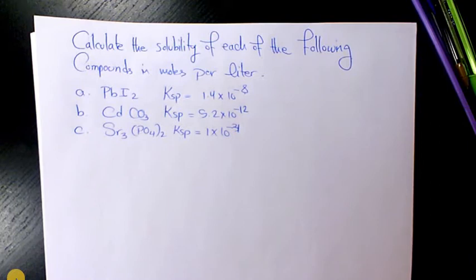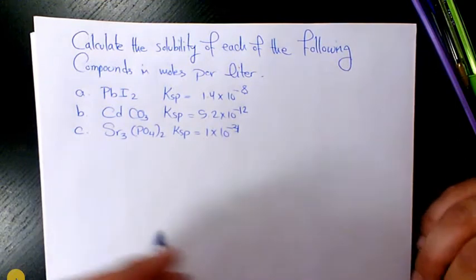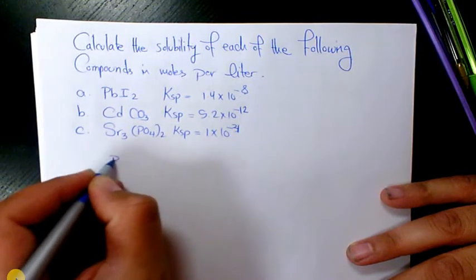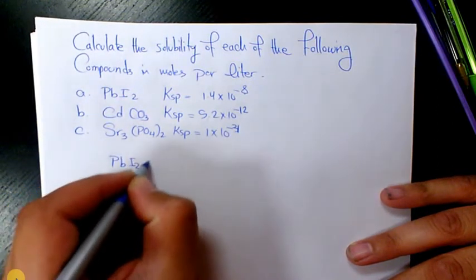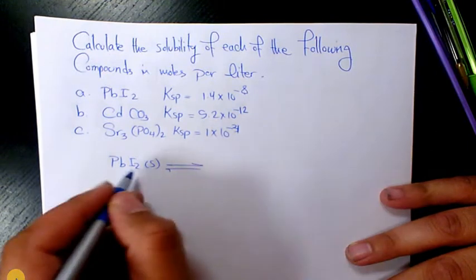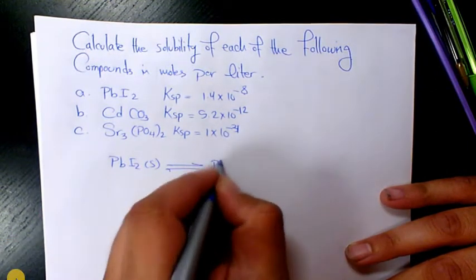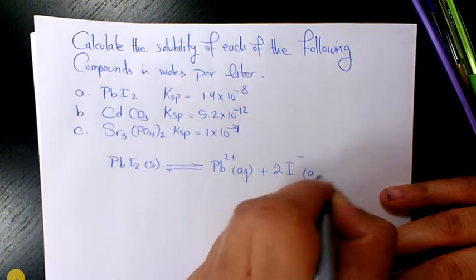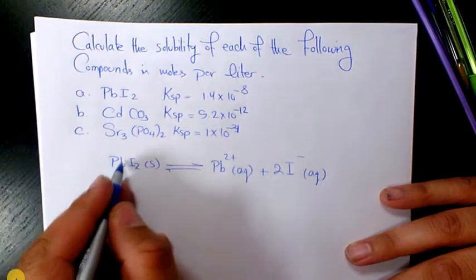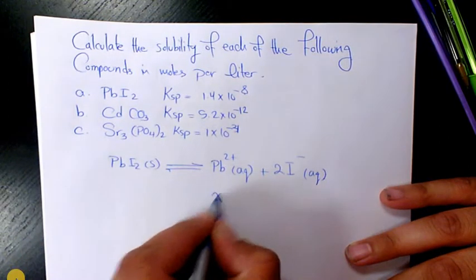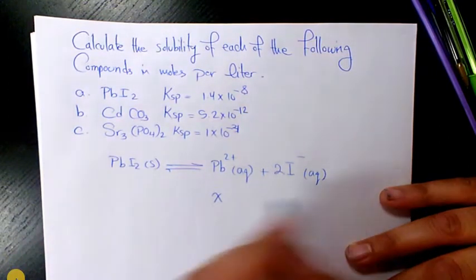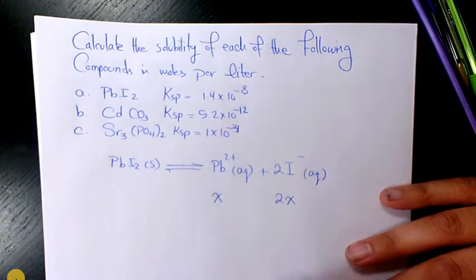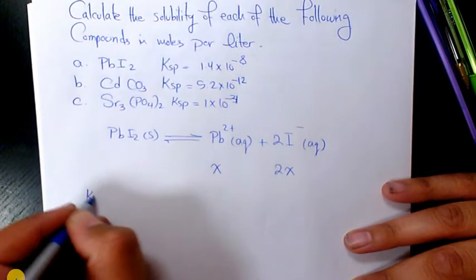The first one is PbI₂, and the KSP is 1.4 times 10 to the power of negative 8. PbI₂, lead iodide, dissolves and it's going to produce Pb²⁺ in aqueous phase plus 2I⁻ in aqueous phase. When it dissolves it's going to produce X moles per liter of Pb²⁺ and 2X from iodide.